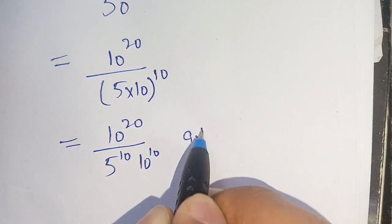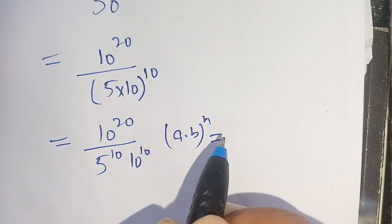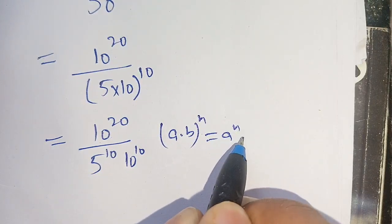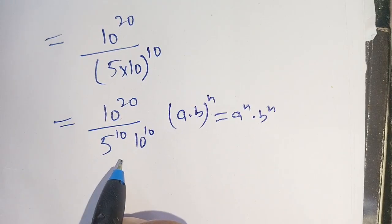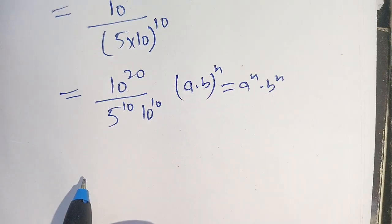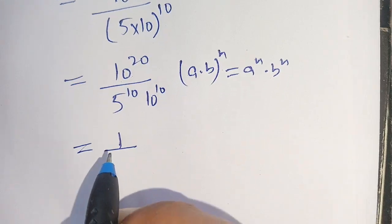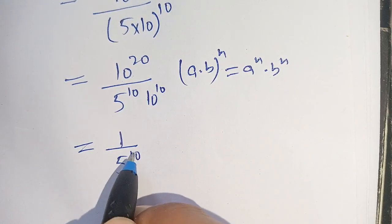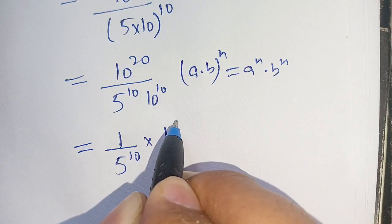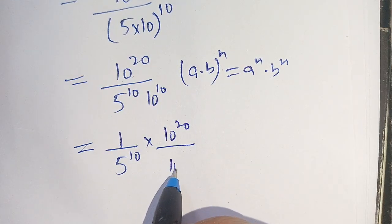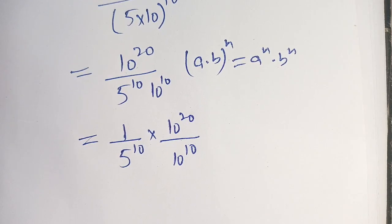We know that (a times b) raised to power n is equal to a raised to power n times b raised to power n. By this identity, we can write it as 1 divided by 5 raised to power 10, times 10 raised to power 20 divided by 10 raised to power 10.